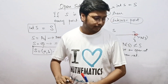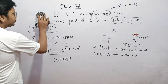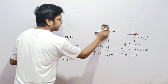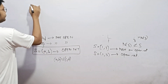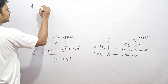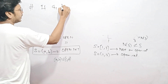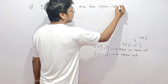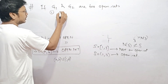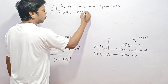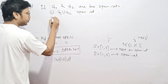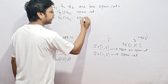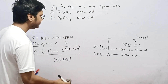The theorem we are going to prove is: if G1 and G2 are two open sets, then (1) G1 ∪ G2 is an open set, and (2) G1 ∩ G2 is also an open set. Let's look at the proof of the first one — whether G1 ∪ G2 is an open set.